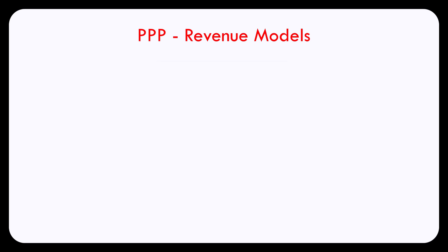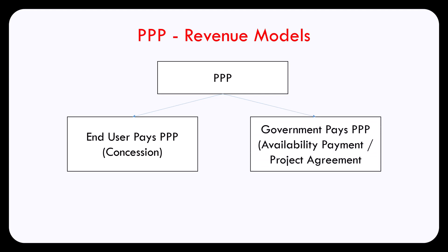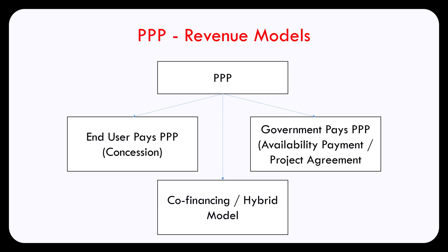The first model is where the end-user pays the private party, also referred to as a concession model. The second model is where the government pays the private party — this is the model in which the government makes an availability payment, sometimes referred to as a project agreement. The third revenue model is a mixture of the availability payment model and the concession agreement.